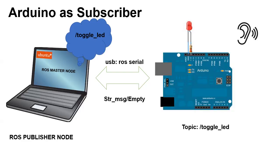Then we'll go to the reverse use case in which Arduino is a subscriber. Your laptop running the ROS master will have a publisher node that publishes a topic called 'toggle_LED' with a String message. On the Arduino board, pin 13 is the default LED pin — you can also connect an external LED. The Arduino will listen for this topic and use an empty message to toggle the LED state: if the LED is off it will turn on, and if it's on it will turn off. You can latch this message to the topic for three to five seconds.